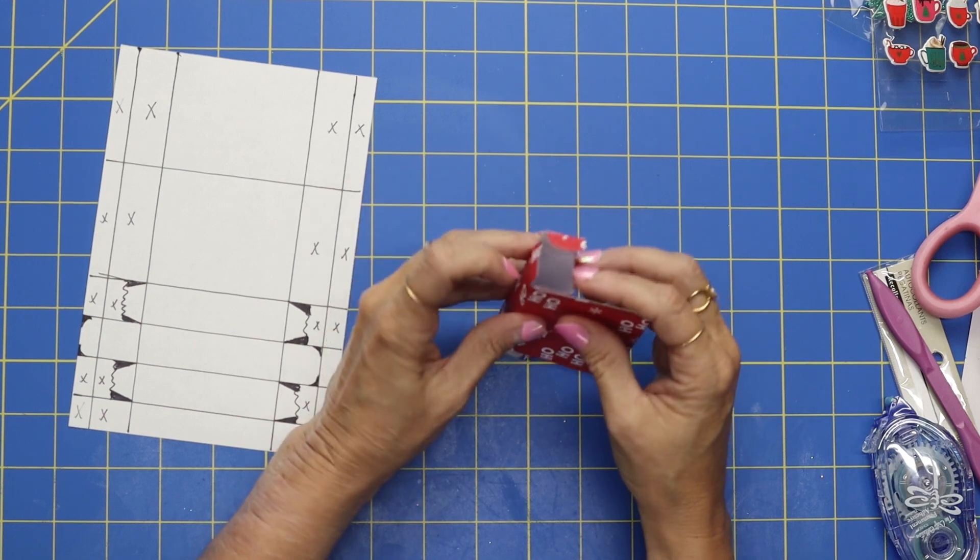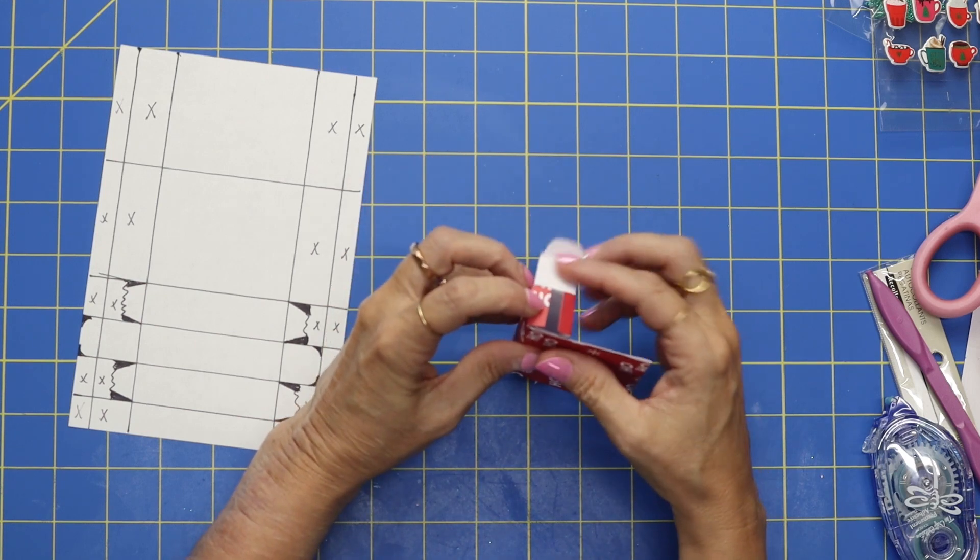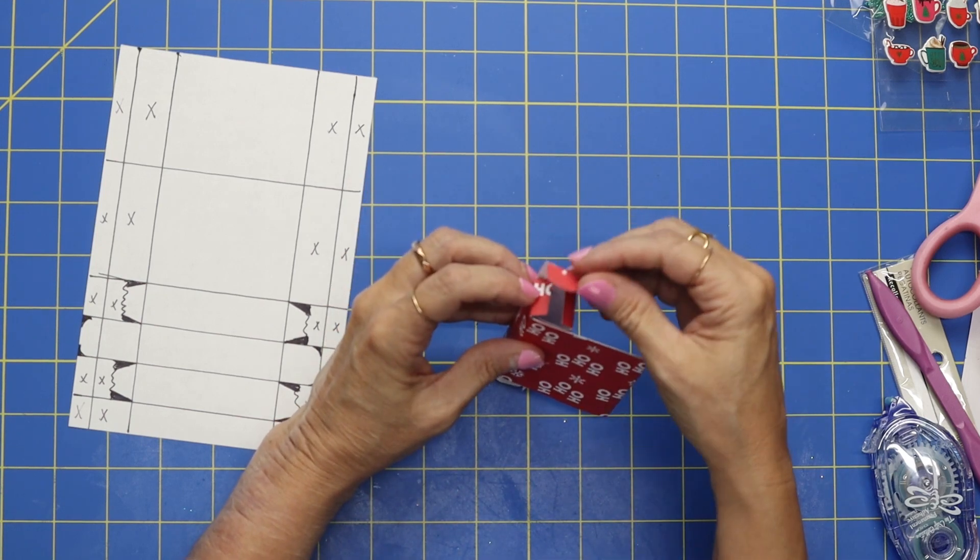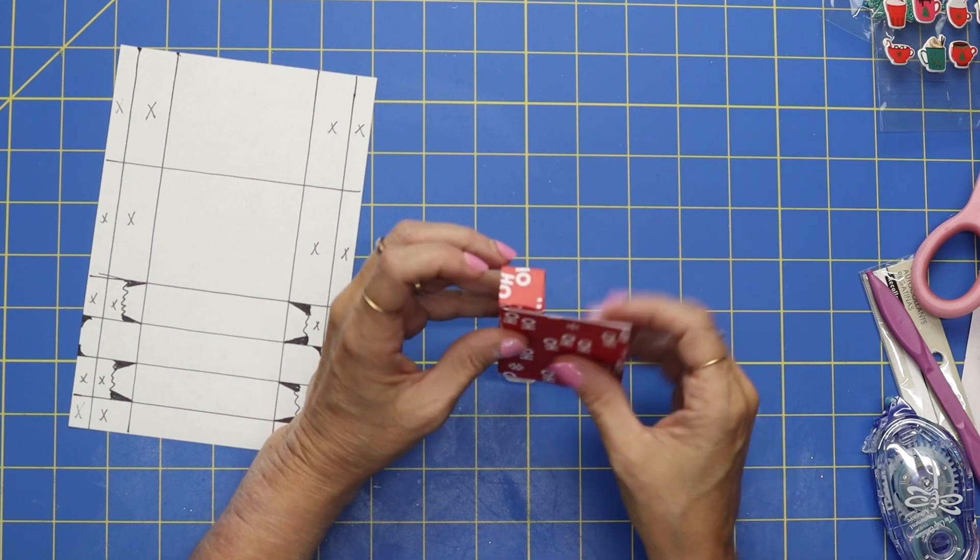So now we have these edges right here. Those will fold in. Those are the two little pieces that we just cut down and then our little tiny piece that we curved the end.